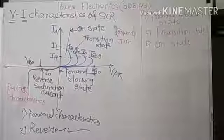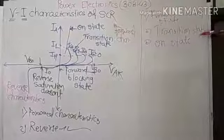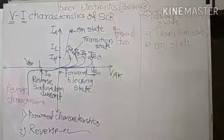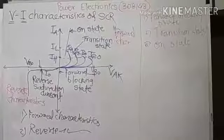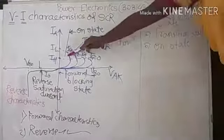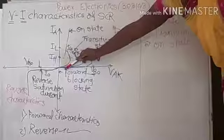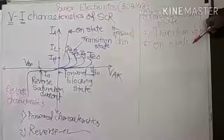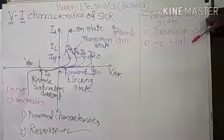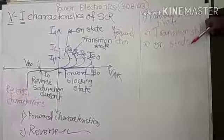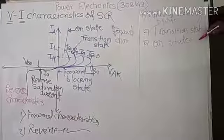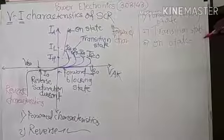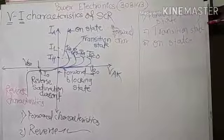The third state is the ON state. In this state, it is a low voltage, high current state — a very small amount of voltage is present but current is very high. In this state, SCR goes into the ON condition, meaning SCR gets turned on.